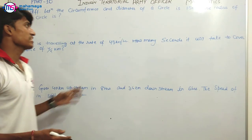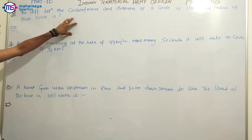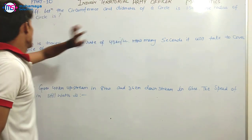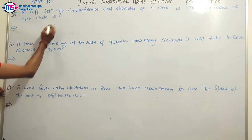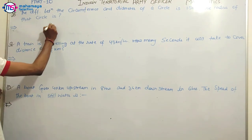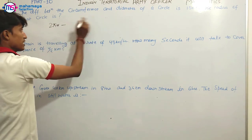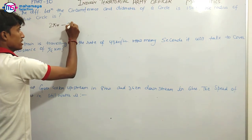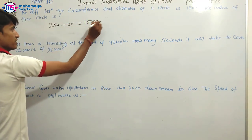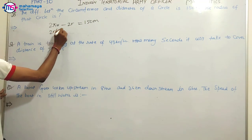The difference between the circumference and diameter of a circle is 150 meters. The circumference of a circle is 2πr and the diameter is 2r. The difference is 2πr minus 2r equals 150.